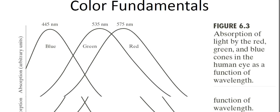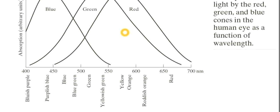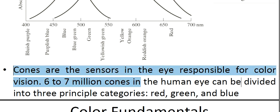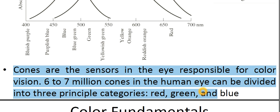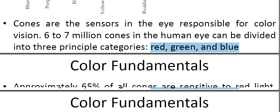Starting today's lecture, resuming from the last lecture, we have seen that different wavelengths are concerned with respect to different colors. Red, green, and blue are very important. You have seen that 445 nm, 535 nm, and 575 nm. Cones are the sensors in the eye that are responsible for color vision.